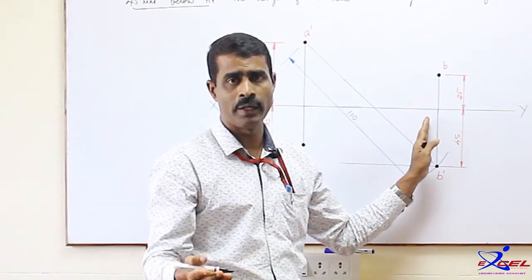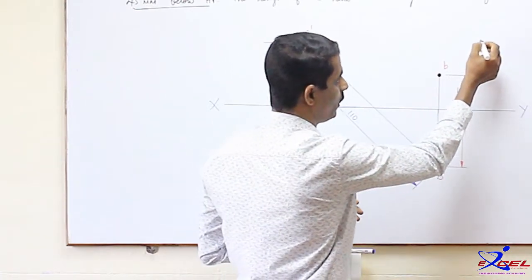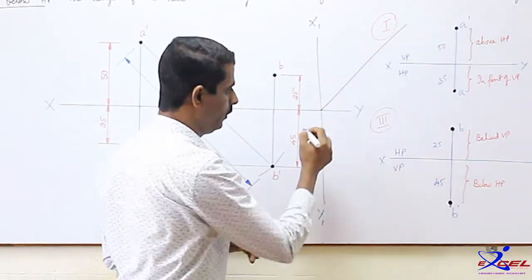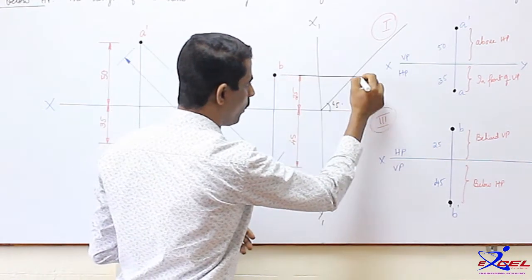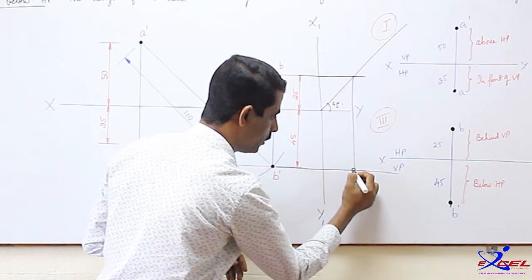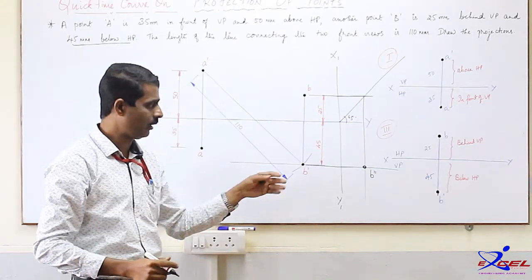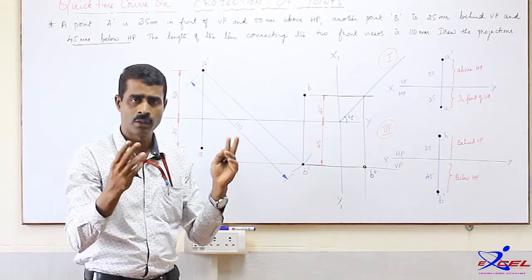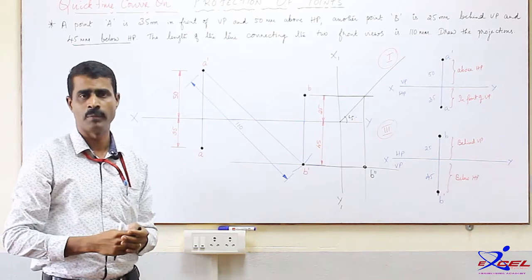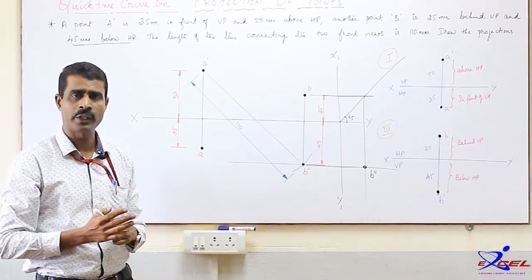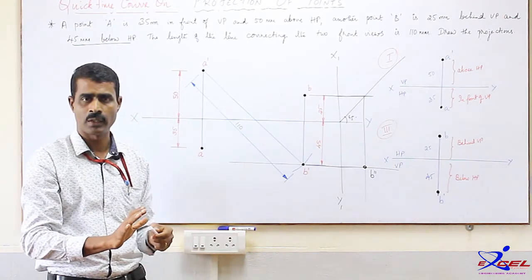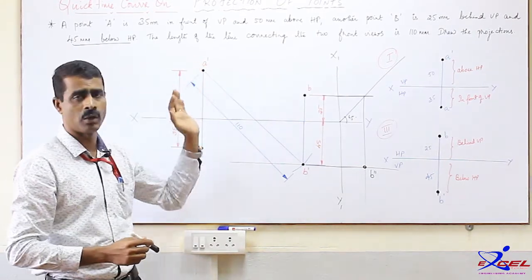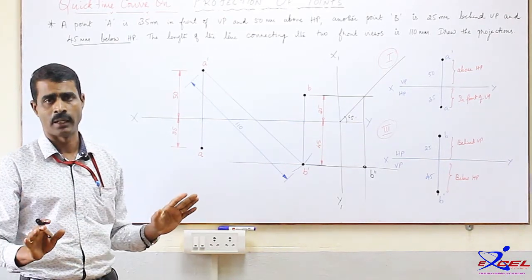For the side view of a point in the third quadrant: draw the X1Y1 line, draw a 45-degree line adjacent to the top view, rotate the top view, and project the front view — this gives B double dash, the profile view. This method works for any point in the first, second, third, or fourth quadrant. The key things to remember are the location of points in various quadrants, their representations, and that the top view is always in the horizontal plane while the front view is always in the vertical plane, regardless of the quadrant. Thank you.